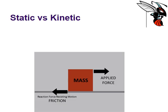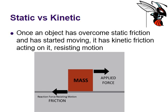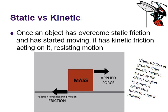Here's the difference between the two — a little diagram. Once an object has overcome that static friction and started to move, it has kinetic friction acting upon it, which is resisting the motion. Static friction is actually greater than kinetic friction. So once you get the object moving — once you get that heavy piece of furniture moving — it's easier to keep it moving than to get it going in the first place.